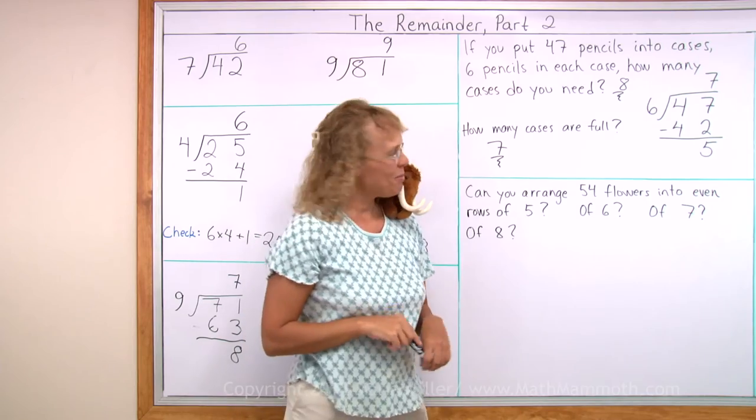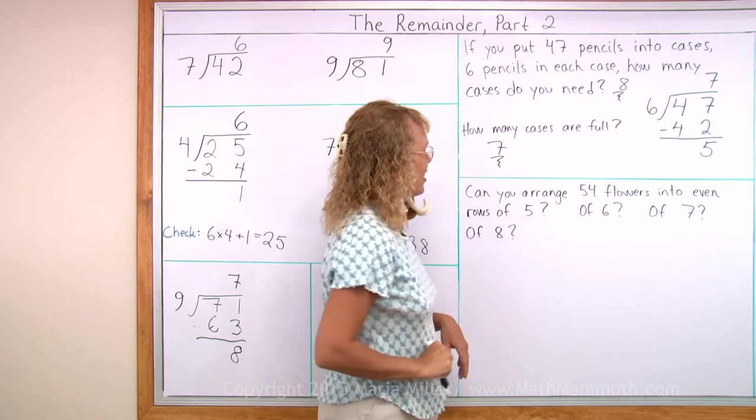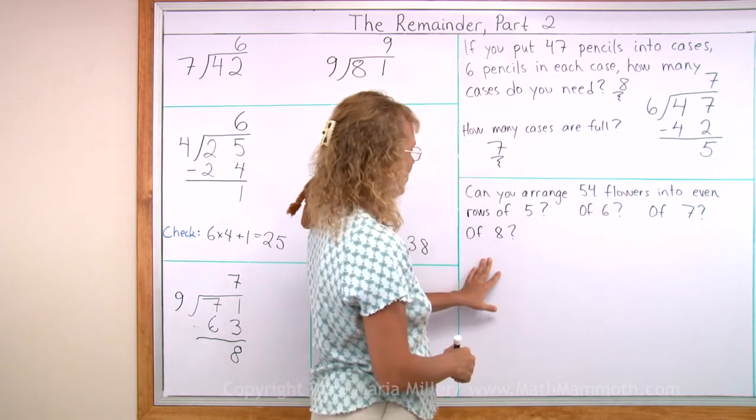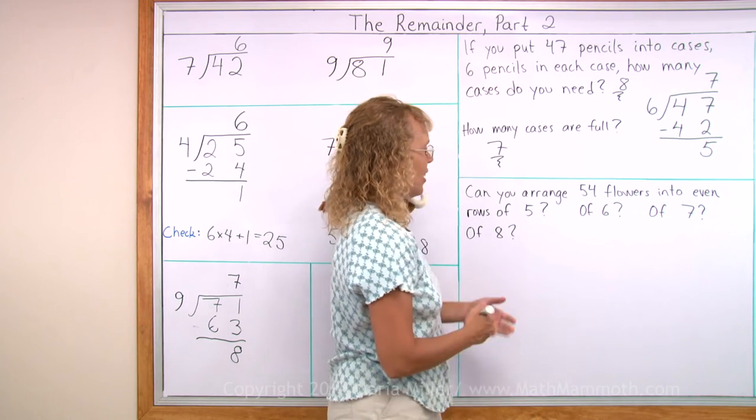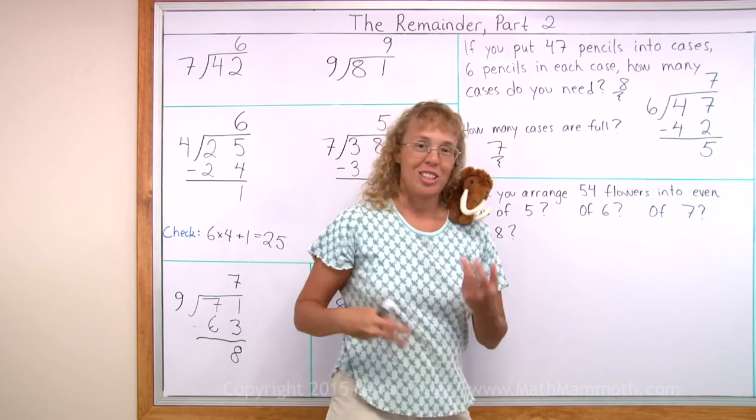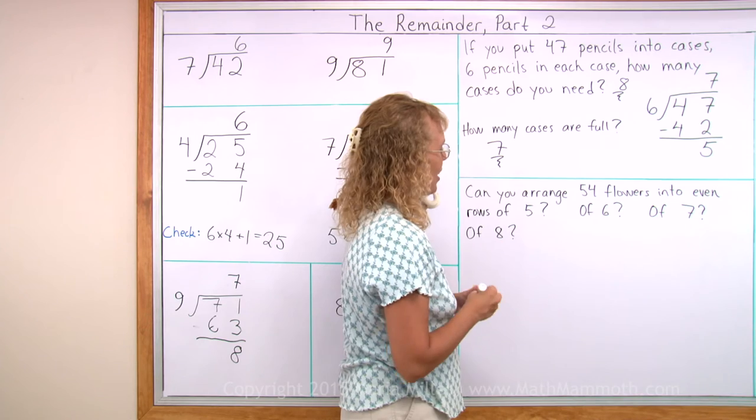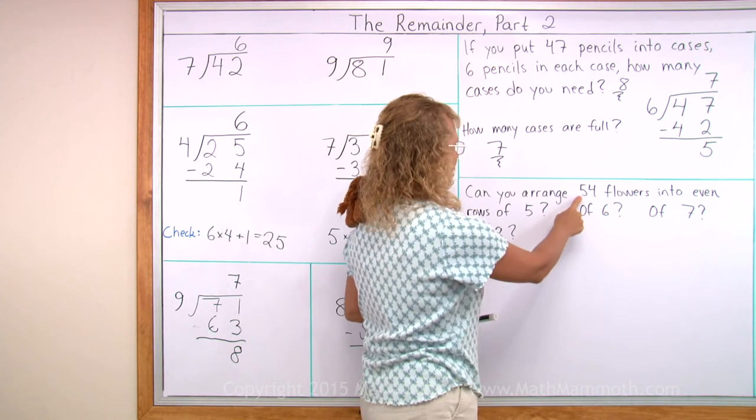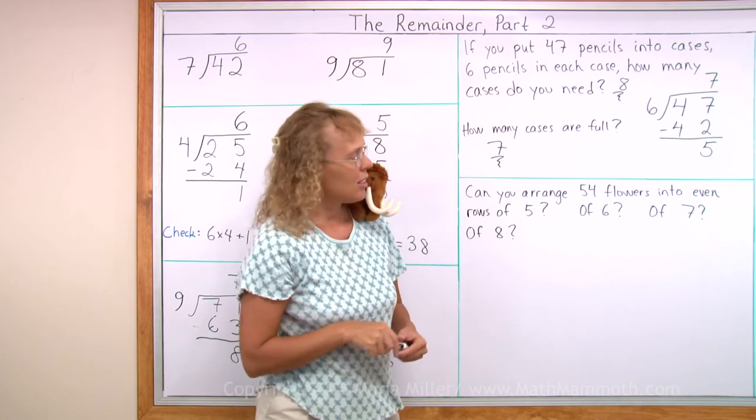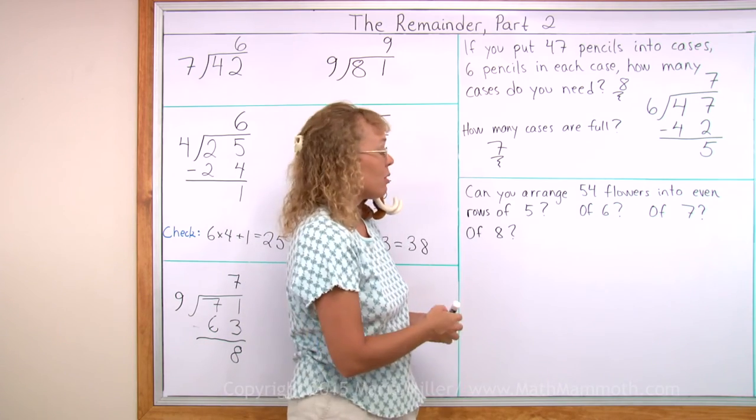And then lastly, we have some flowers to arrange. Can you arrange 54 flowers into even rows of 5? Of 6? Of 7? Of 8? Even rows. And this really is a multiplication table question. Because is 54 in any of these tables? Is 54 in the table of 5? No, it isn't. So my answer is no. I could not arrange 54 flowers into even rows of 5.